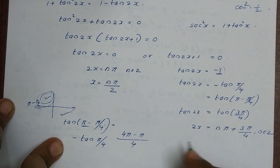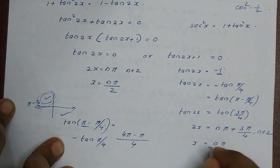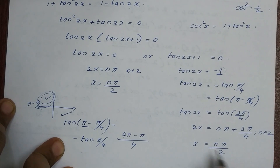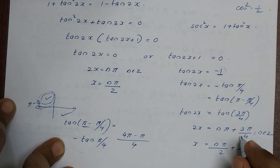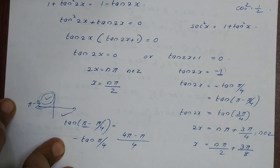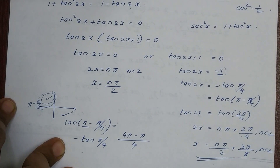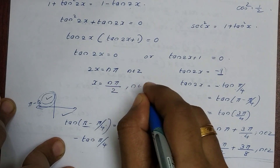Dividing by 2: x equals nπ/2 plus 3π/8, where n belongs to Z. This is the general solution for problem 8.